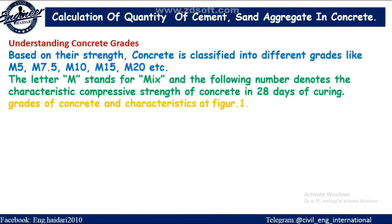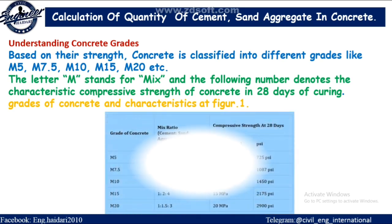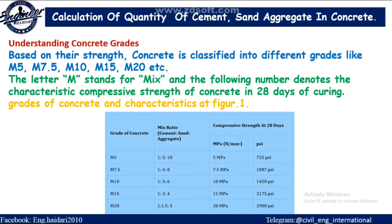Understanding concrete grades: Based on their strength, concrete is classified into different grades like M5, M7.5, M10, M15, M20, etc. The letter M stands for mix and the following number denotes the characteristic compressive strength of concrete in 28 days of curing.